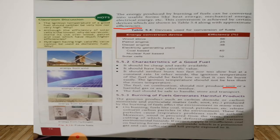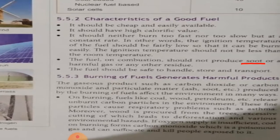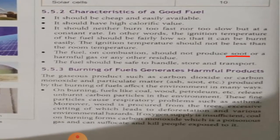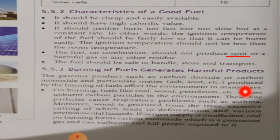Now in this class we are going to study about burning of fuels and how it generates harmful products. Students, open page number 74 in your science book and keep a pencil with you to underline hard words. The gaseous products such as carbon dioxide or carbon monoxide, and particulate matter such as ash and soot produced by the burning of fuels affect the environment in many ways.